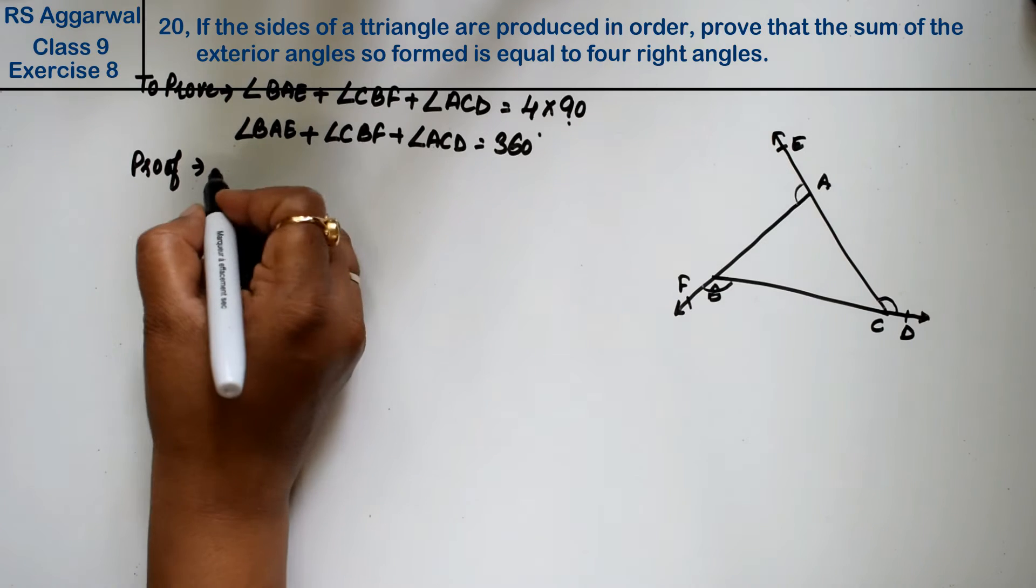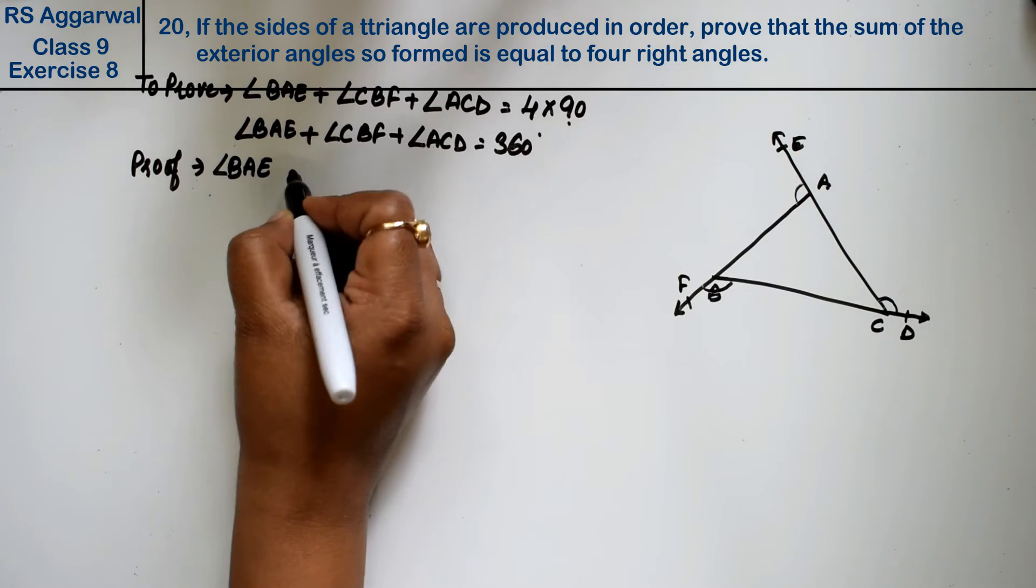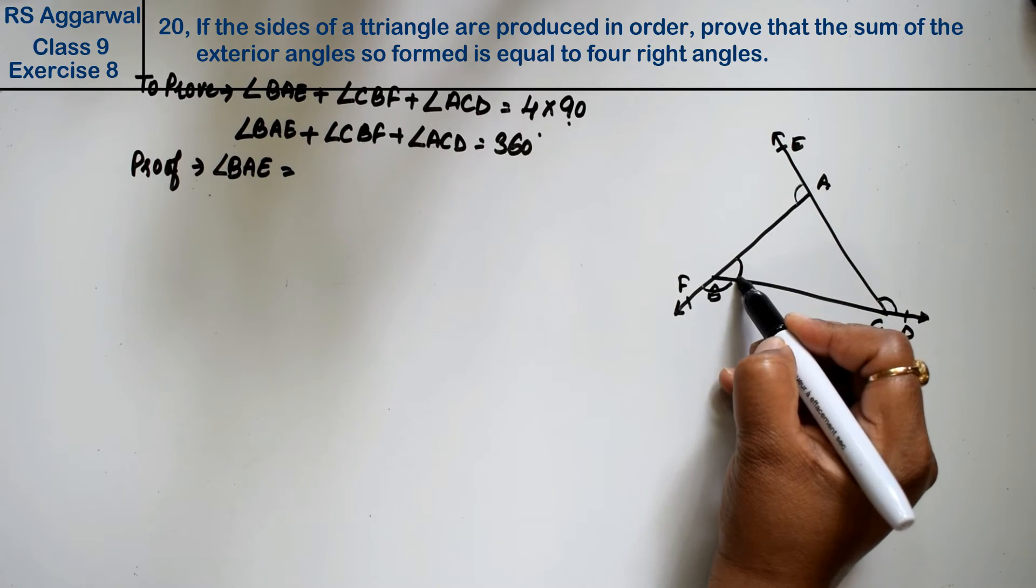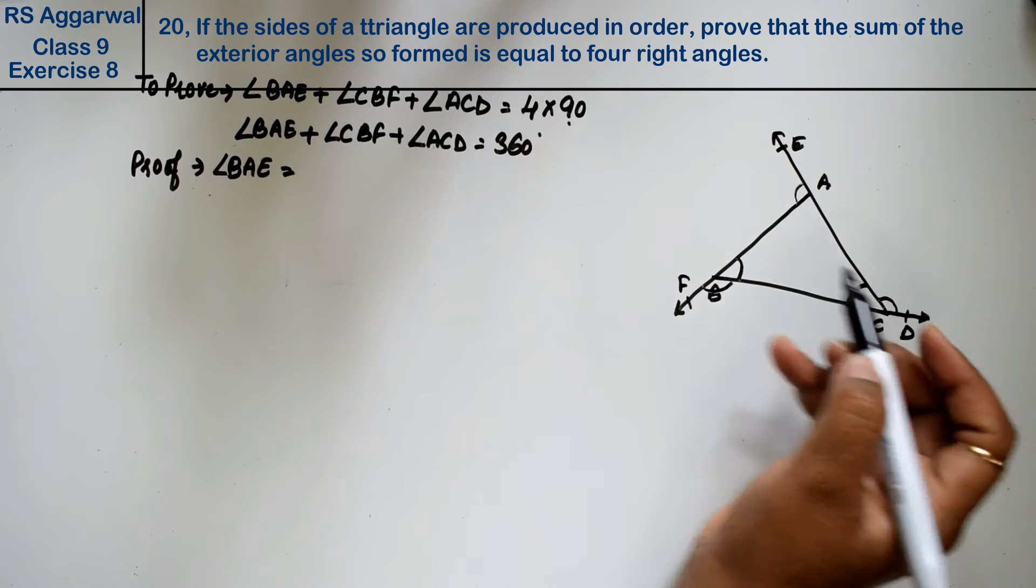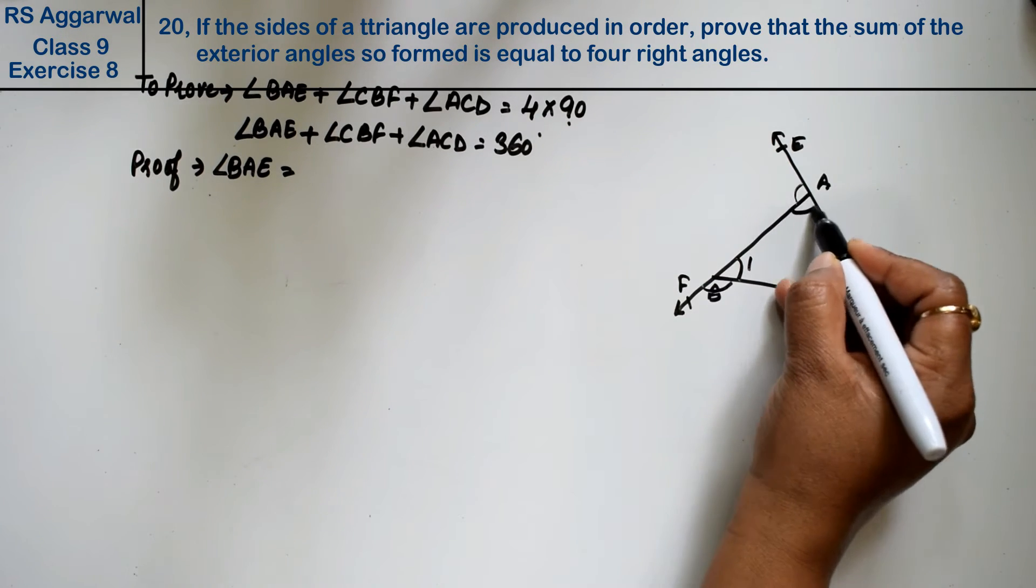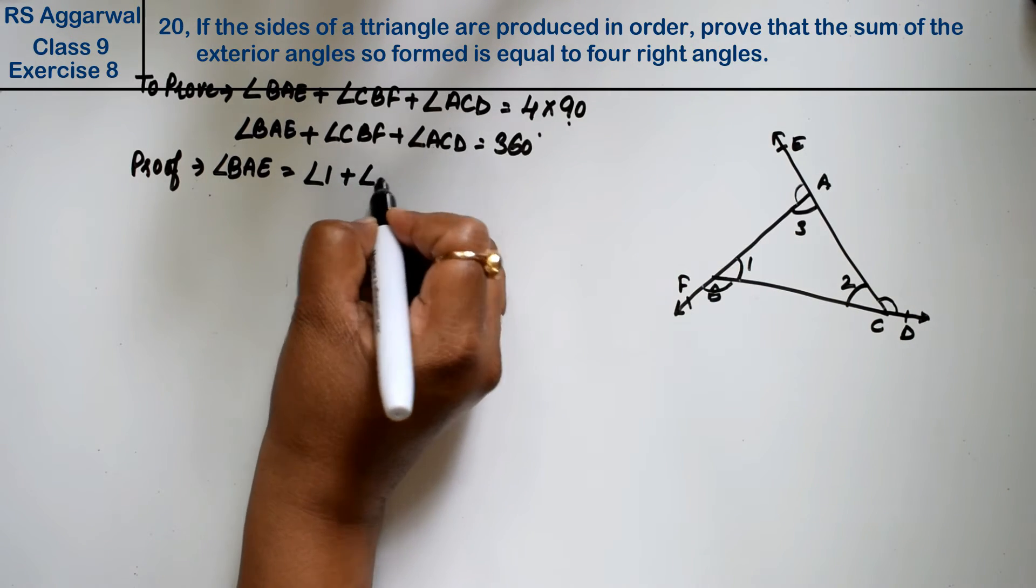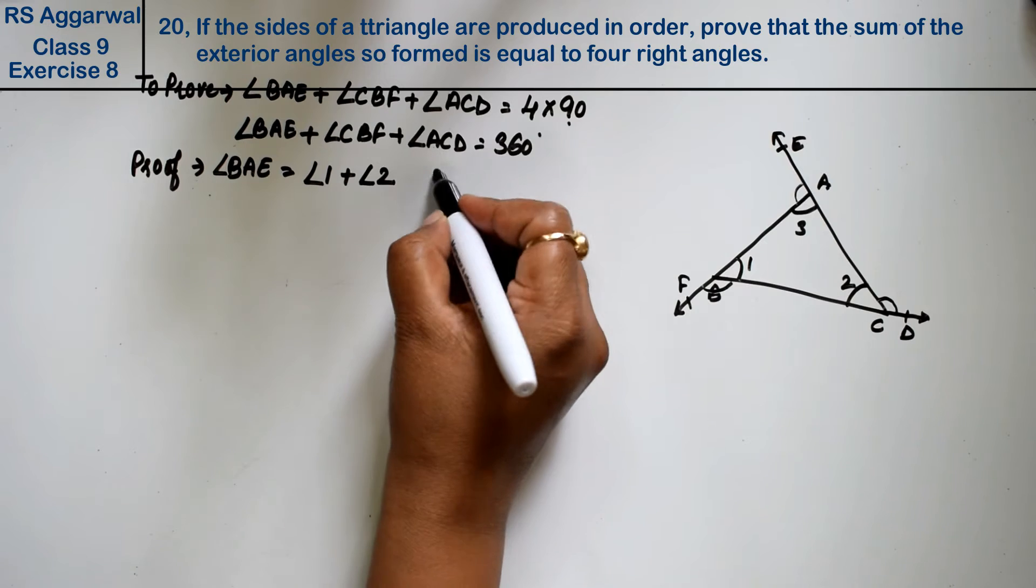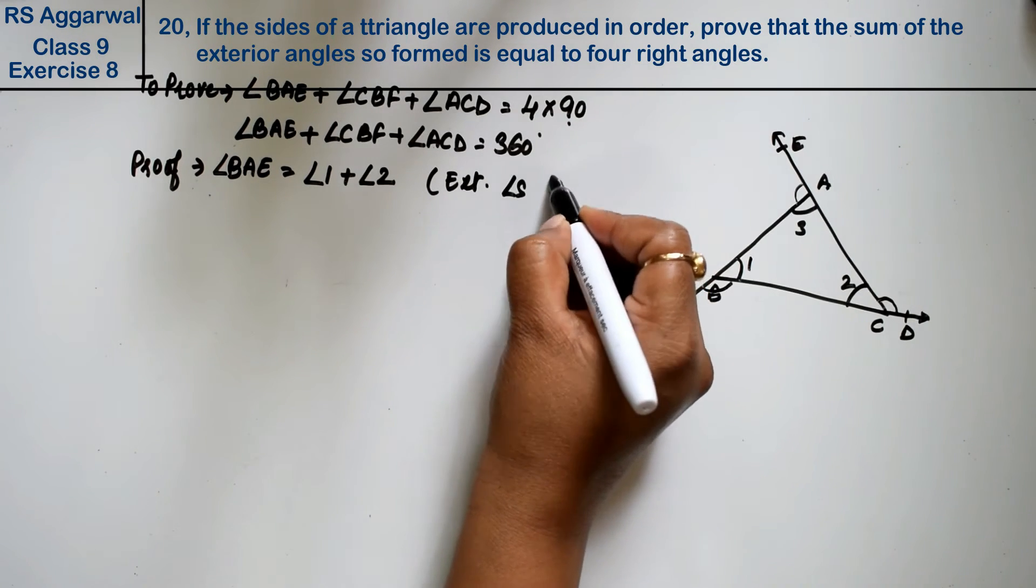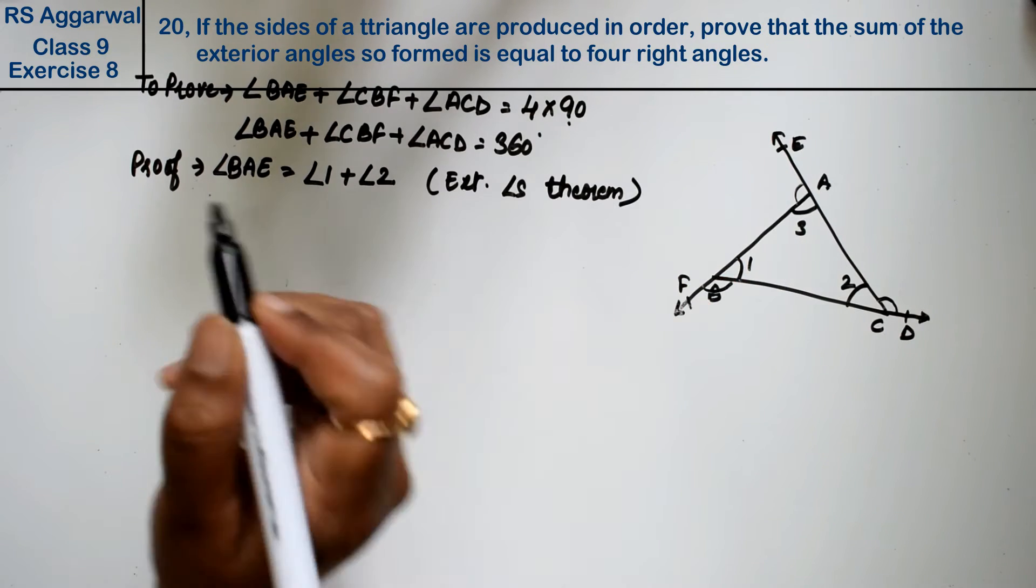Proof: We know that angle BAE is an exterior angle. We can write this as angle 1 and angle 2. So angle 1 plus angle 2, by exterior angle theorem.